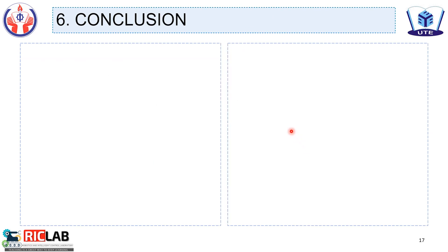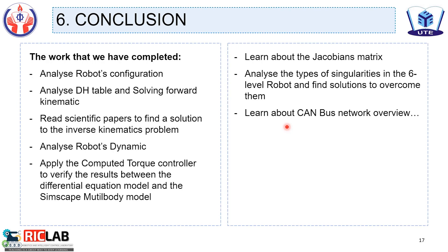And in the conclusion, according to this report, we summarize the work that we had completed. The first, we can analyze robot configuration. Second, we analyze the DH table and solving forward kinematic. The next one, we can read the scientific paper to find a solution to the inverse kinematic problem. Analyze robot dynamics.